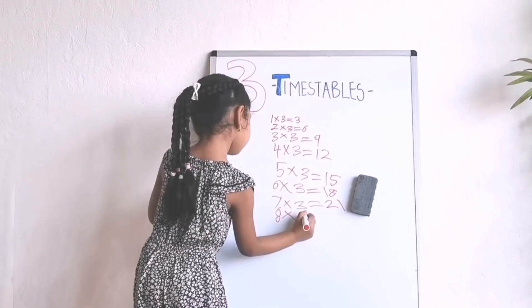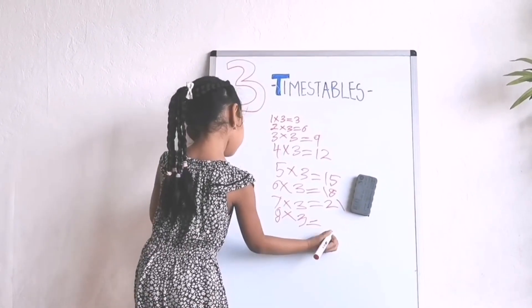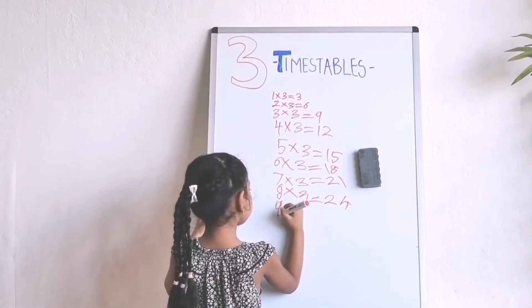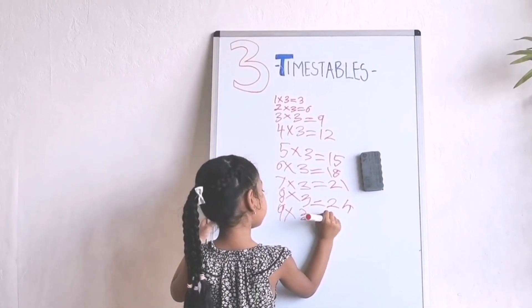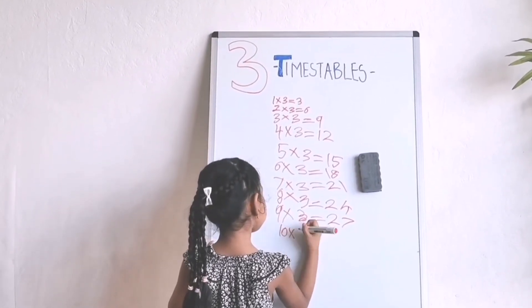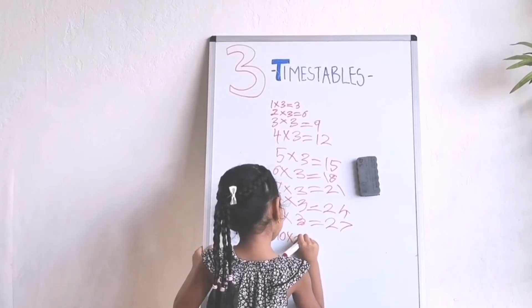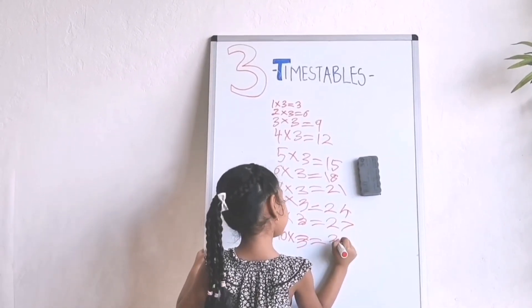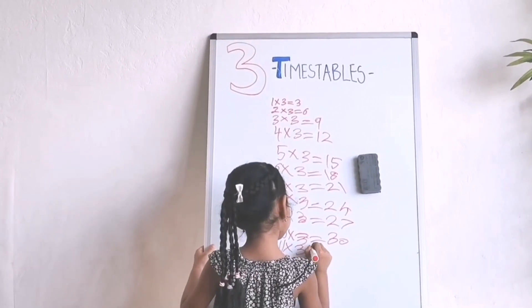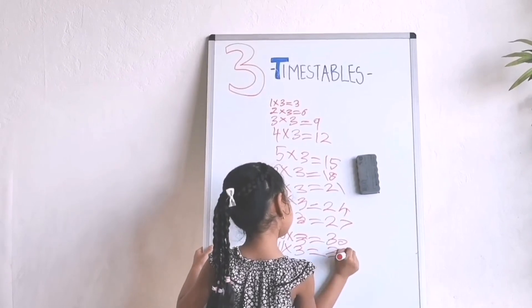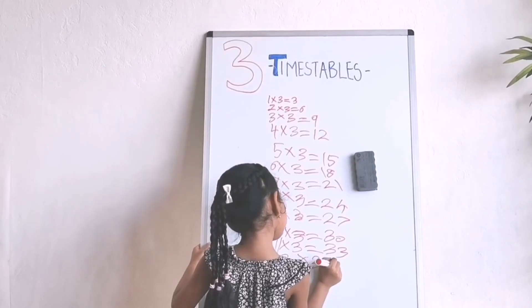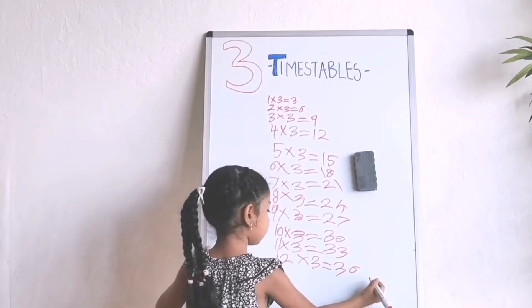Seven times three equals twenty-one. Eight times three equals twenty-four. Ten times three equals thirty.